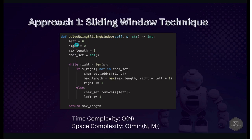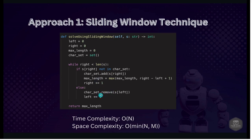Looking at the code: we initialize left and right pointers to 0, max_length to 0, and a character set as an empty set. The while loop runs while right is less than the length of the string. Inside the loop, if s[right] is not in the character set, we add it, update max_length as max(max_length, right - left + 1), and increment right. Otherwise, we remove s[left] from the character set and increment left. At the end we return max_length. Time complexity is O(n) where n is the length of the string. Space complexity is O(min(n, m)) where m is the size of the character set — the space used by the hash set.